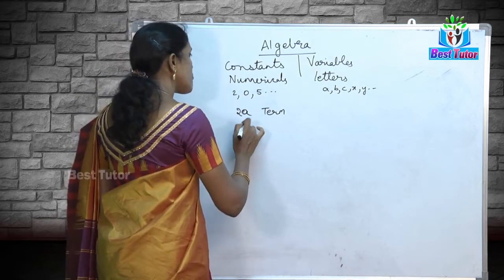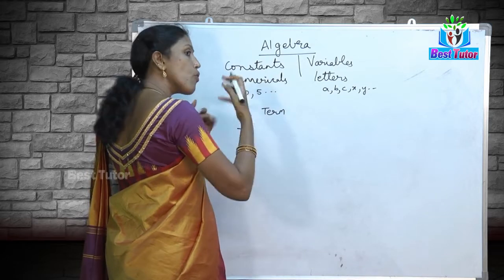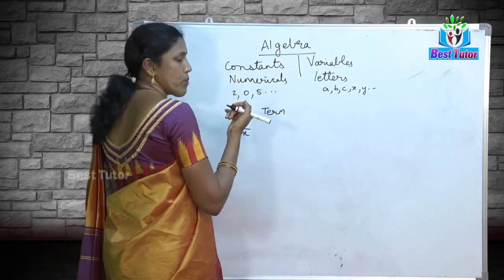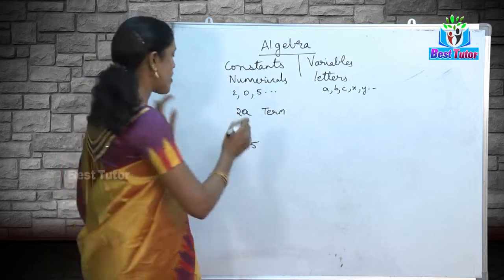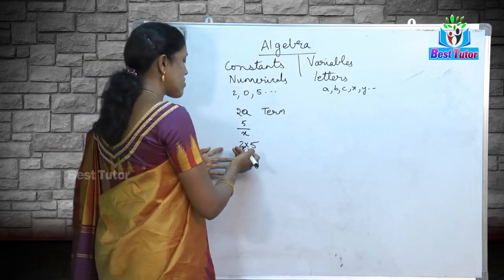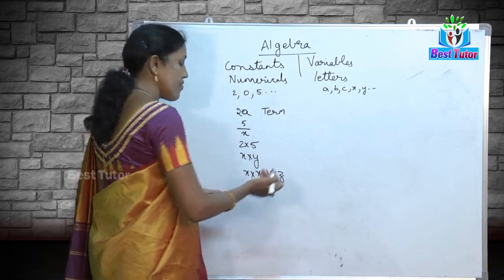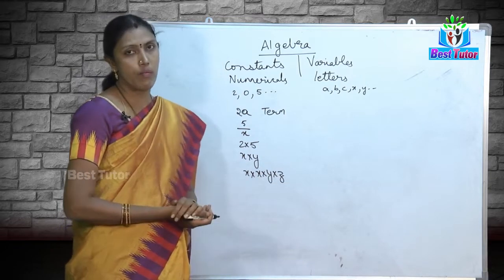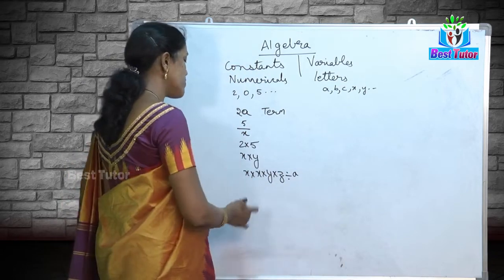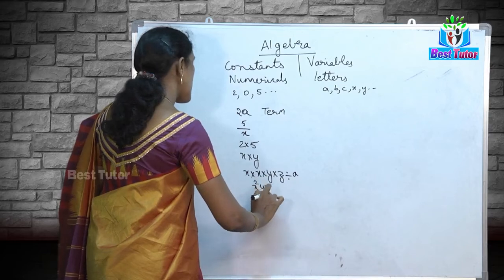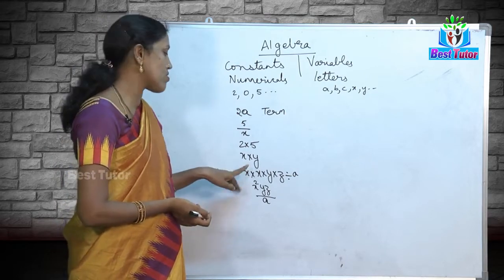So 2a or 5/x are terms. I can also pick up only variables or only numericals — 2 into 5 equals 10, which is a numerical term; x into y is a variable term. If I have x into x into y into z divided by a, written precisely as x²yz/a, that is also a term.